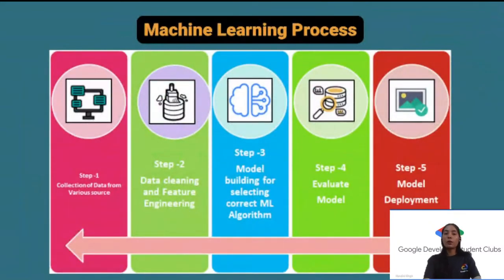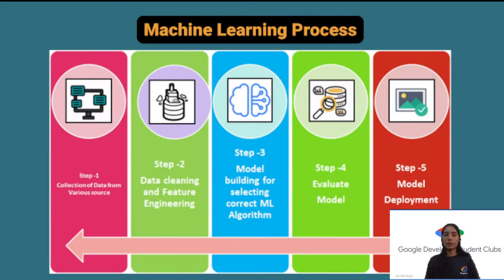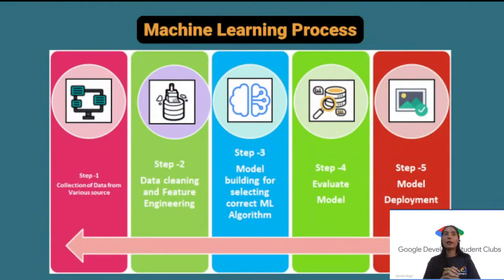The machine learning process starts with Step 1: data collection from various sources. You need to understand the problem statement and identify your stakeholders — those who will benefit from the process. Once you understand these, you can collect data from sources like Kaggle or government organizations.